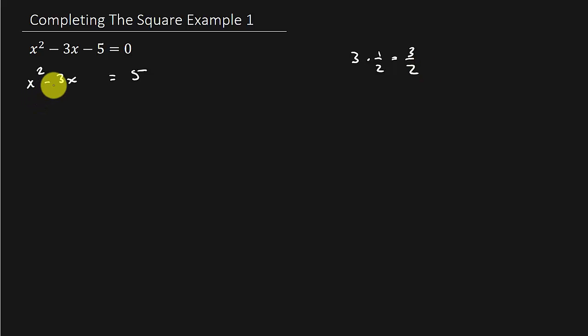It doesn't matter if you take the minus sign with it or not because you're going to end up squaring it anyway. And then you're going to get positive. So we took the middle term, we halved it, and that gives us 3 halves.